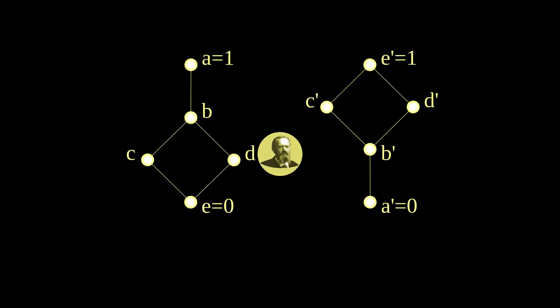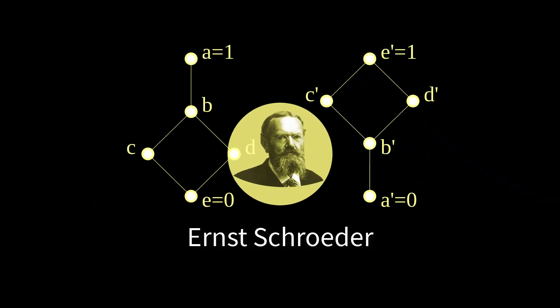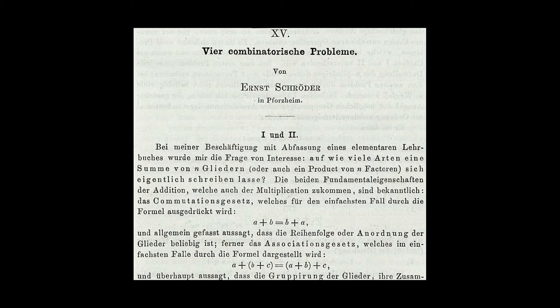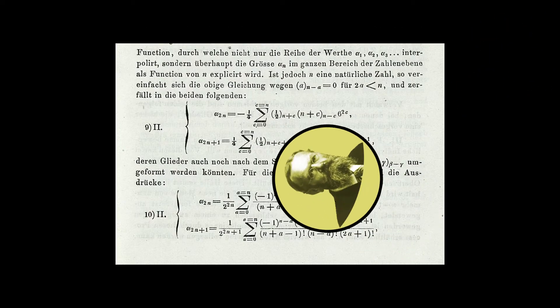In 1870, one of mathematical logic's top dogs, Ernst Schroeder, published a paper describing his latest discovery. Neither Schroeder nor his readers realized that the discovery wasn't new.